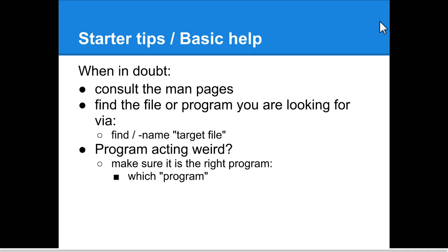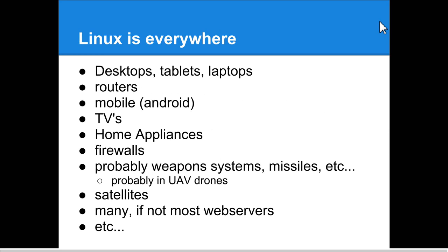Let's get to the actual lecture: Linux 101 — system administration and attack. If you're new to Linux, these are starter tips. When in doubt, consult the man pages. If you're looking for a file, you can use 'find / -name' and then the target file name. If the program is acting weird, make sure it's the right program — names get reused. For example, the X GUI system has a program called 'nc', which is the common shorthand for Netcat. Use 'which' and then the program name to determine where that binary is.